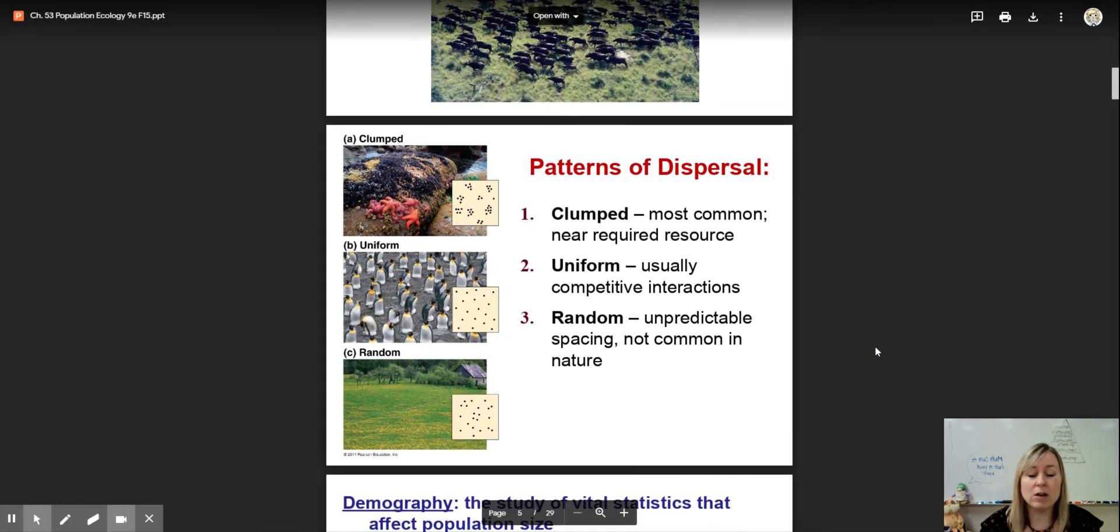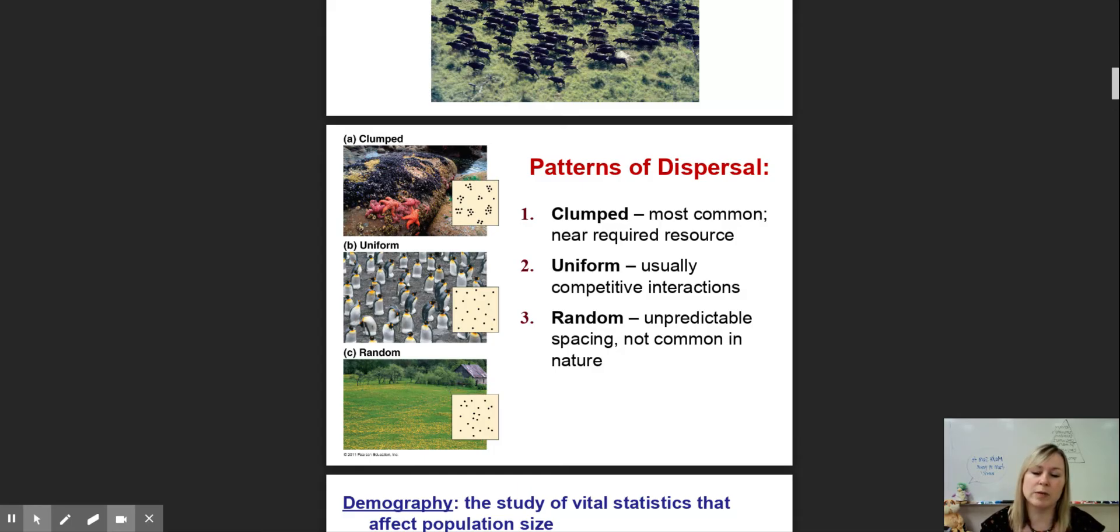Dispersal—a very common form is called clumped dispersal. That's going to be really common around a resource. If there's plant matter or food in one area, all the organisms tend to be clumped around that resource, around that food or water.